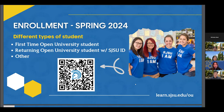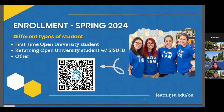You can scan the QR code to go to our main website page. Find the Spring semester and click 'How to Register.' There will be a large link that says 'How to Register.' The website will give you step-by-step instructions for each student status, whether you are a first-timer or a continuing student.